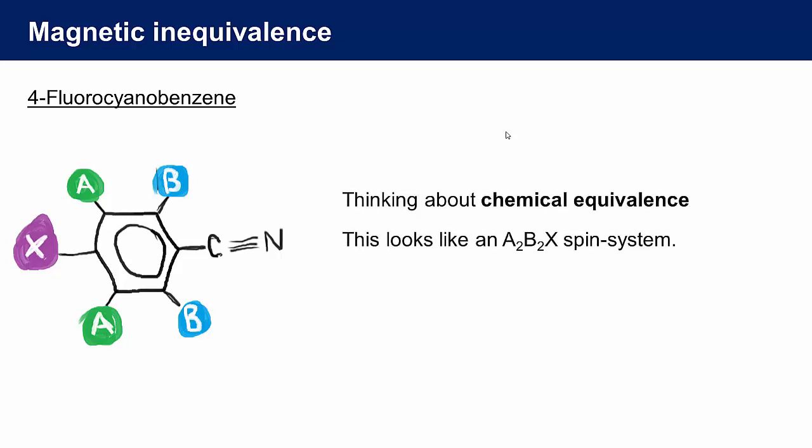So from a symmetry perspective, we could describe the molecule as an A2B2X spin system, and that would suggest that in the fluorine NMR, the fluorine atom would couple to the two A atoms, and to the two B atoms, and give us a triplet of triplets. This is what we observe.